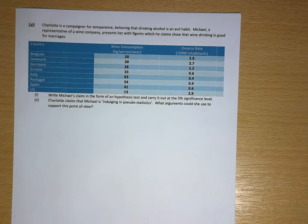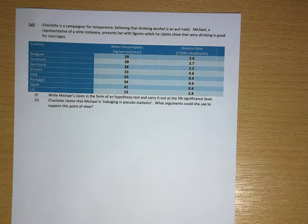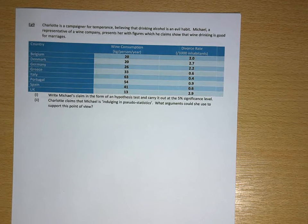Next example. Charlotte is a campaigner for temperance, believing that drinking alcohol is an evil habit.